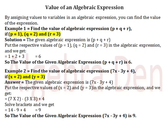So, the value of the given algebraic expression 7x minus 3y plus 4 is 9.